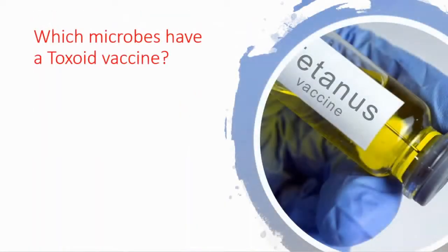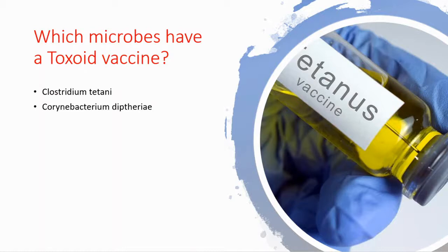Which microbes have a toxoid vaccine? Clostridium tetani, which causes opisthotonus, lockjaw, and spastic paralysis and Risus Sardonicus. We also use it for Corynebacterium diphtheriae, which causes diphtheria, and for Bordetella pertussis, which causes whooping cough.